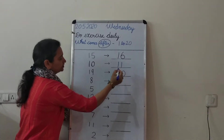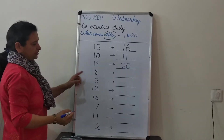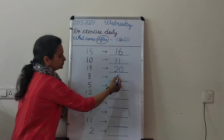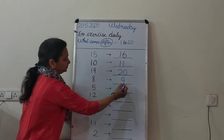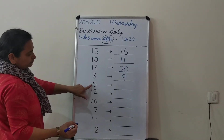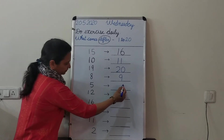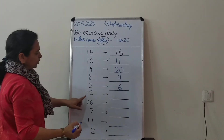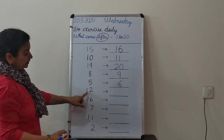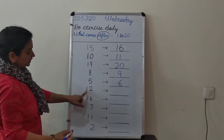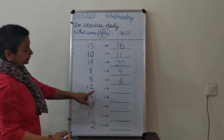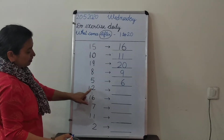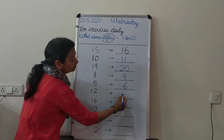What comes after 90? 20. And read this number — what comes after 8? 9. What comes after 5? Number 6. And what comes after? Read it neatly, nicely. It's 12, not 21. Read it properly. 12. What comes after 12? 13.